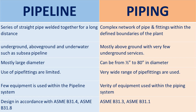In summary — Pipeline: series of straight pipes welded together for a long distance; runs underground, above ground, and underwater such as subsea pipelines; mostly large diameter; limited use of pipe fittings; few pieces of equipment. Piping: complex network of pipes and fittings within the defined boundaries of the plant; mostly above ground with very few underground services; can range from half inch to 80 inches in diameter; very wide range of pipe fittings are used.